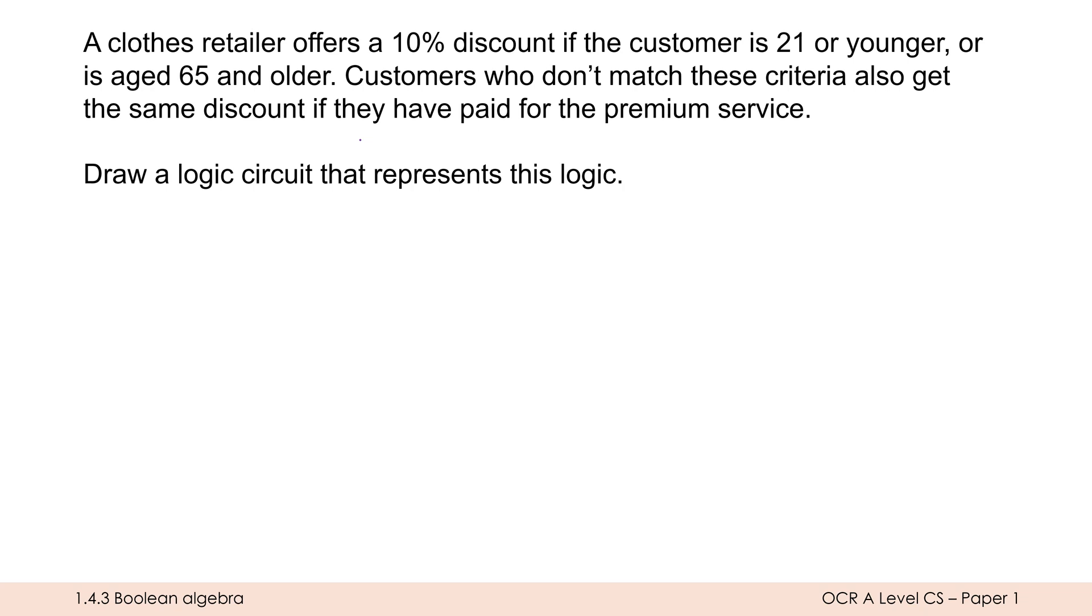So here, a clothes retailer offers a 10% discount if the customer is 21 or younger, or is aged 65 and older. Customers who don't match these criteria also get the same discount if they have paid for the premium service. And we're told to draw a logic circuit that represents this logic.